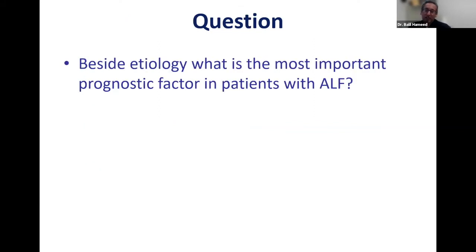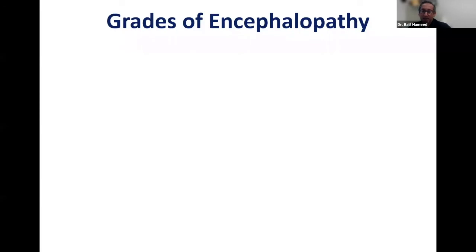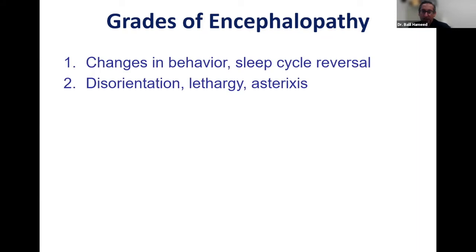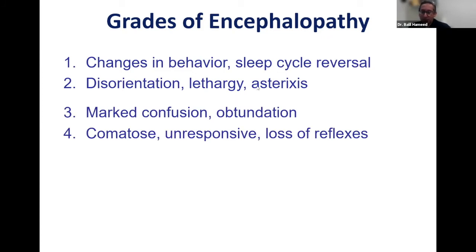After etiology, the second most important prognostic factor is the grade of hepatic encephalopathy. We divide it into four grades. Grade one: changes in behavior or sleep reversal cycle. Grade two: disorientation, lethargy, very slow to answer questions, and asterixis — when you ask the patient to extend their hands, they shake, which is what we call asterixis. Grade three: marked confusion or obtundation. Grade four: completely unresponsive, comatose, loss of reflexes.